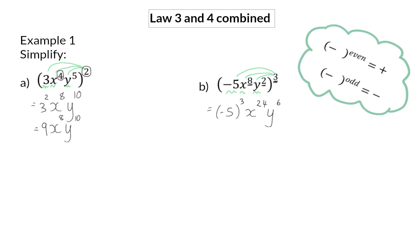It is useful to remember that when a negative value is raised to an even power, it will always become positive. But when a negative value is raised to an odd power, it will stay negative. So here, minus 5 to the power of 3 will still be a negative value.